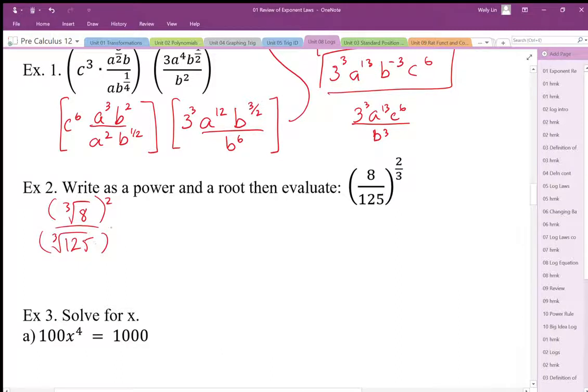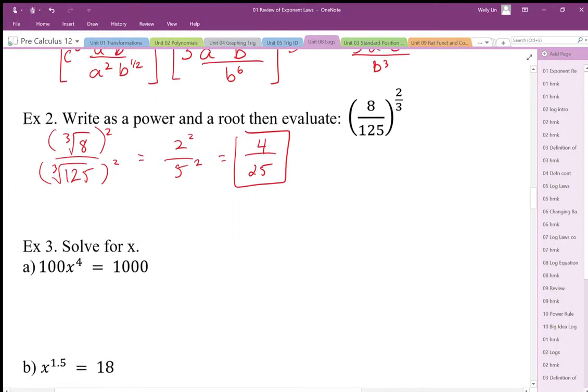So the cube root of 8 is 2, cube root of 125 is 5, and then I'm going to square those numbers: 4 over 25. So notice that I cube rooted first to make the number smaller. If I want to do this in my head, I don't want to square first and then cube root, because it's really hard to do cube root of really big numbers.